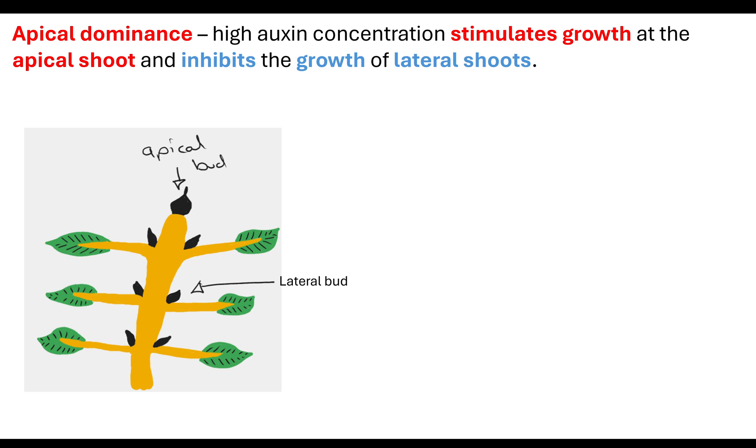What is apical dominance? Apical dominance is where high auxin concentrations stimulate growth at the apical shoot, then inhibit the growth at lateral shoots. Why? What's the purpose? Why would a plant do this? Plants grow taller by having this apical dominance, and it means they are more efficient at competing for sunlight.